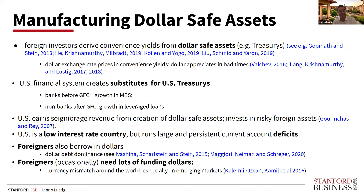You get this interesting dynamic where, even though the U.S. is a low-interest-rate country and the dollar is a low-interest-rate currency, the U.S. manages to run large and persistent current account deficits. Foreigners also want to borrow in dollars because borrowing in dollars is cheap. There's dollar debt dominance in global financial markets. Recent work by Maggiori, Neiman, and Schreger shows that foreign investors really only want to hold dollar debt if they're going to hold debt not denominated in their own currency.